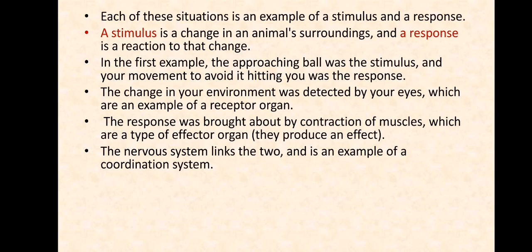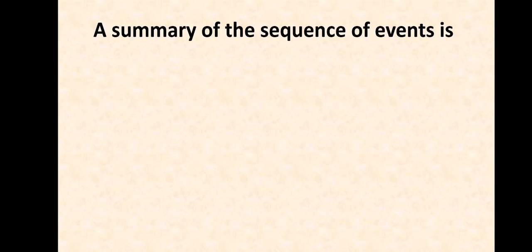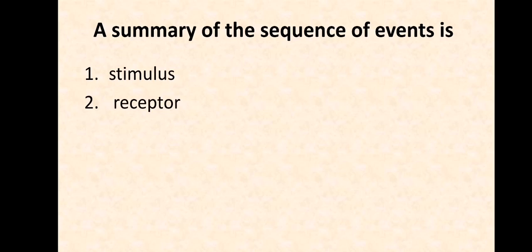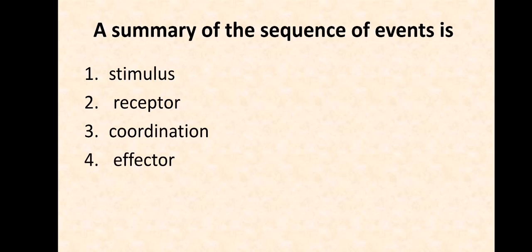A summary of the sequence of events is: stimulus, then a receptor to detect the stimulus, then coordination to link up different body activities together, then an effector, and finally the response.